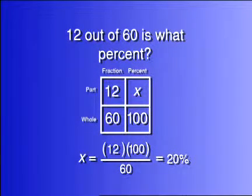For the second problem, we know the part of the fraction, 12, and the whole of the fraction, 60. A whole percent is always 100. Therefore, we multiply the 12 times the 100 and divide by the 60 to find that x equals 20%.